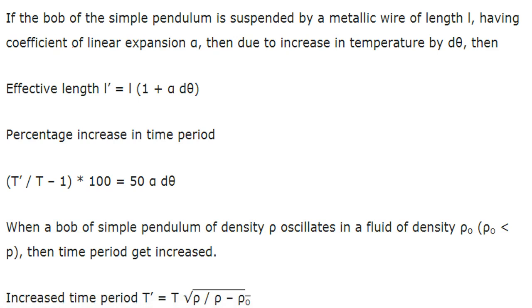If the bob of a simple pendulum is suspended by a metallic wire of length l having some coefficient of linear expansion, then due to an increase in temperature by dθ, the effective length will change. The percentage increase in the time period is also given by the corresponding expression.